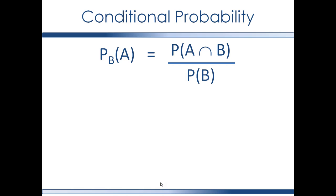Before calculating the conditional probability, there are some conditions to follow. The denominator cannot be zero, so the probability of B cannot be zero. The probability is also positive, which is the condition of being a measure. The intersection should be non-negative — it can be zero, and it will be zero for disjoint sets.